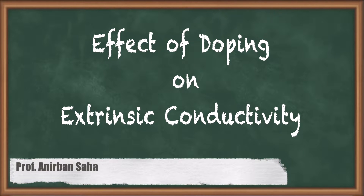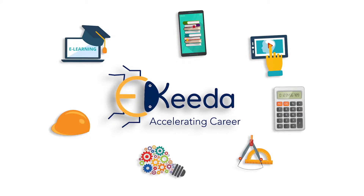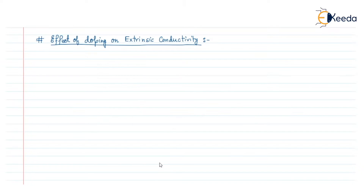In this video we are going to discuss the effect of doping on an extrinsic semiconductor, that is the extrinsic conductivity. For this case, let us take the n-type semiconductor. We know that the conductivity of the n-type material, sigma n, is equal to the donor concentration N_d multiplied by q multiplied by the mobility of the electron, mu n.